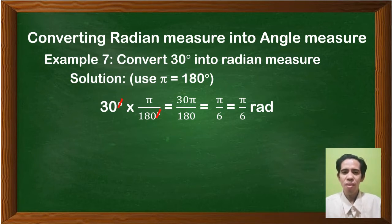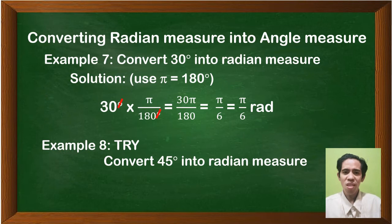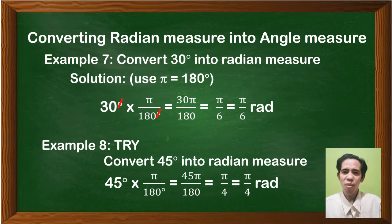For example number eight, try converting 45 degrees into radian measure — I'll give you 20 seconds. Let's check: 45 degrees times π over 180 degrees equals 45π over 180. Simplify: that is π over 4 radians. That's right — you're doing good.